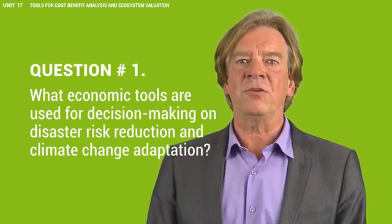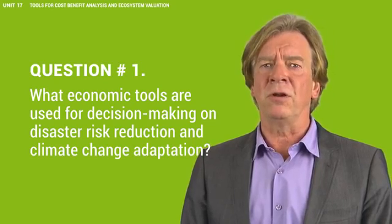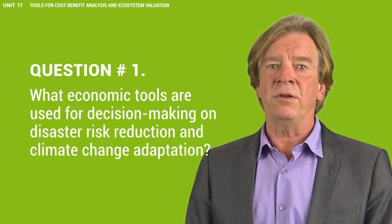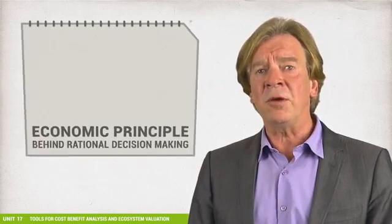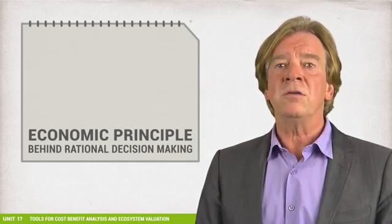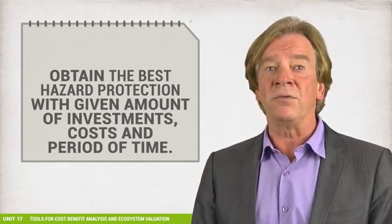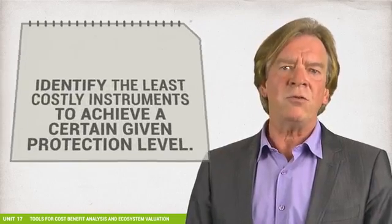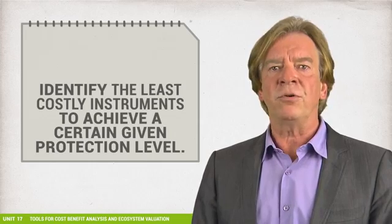Decision-making on disaster risk reduction takes place at various scales, from the national down to the local level. At the macro level, governments take decisions, while at the local level, stakeholders such as communities and project managers are involved. The economic principle behind rational decision-making is the same: we either want to obtain the best protection against hazard events with a given amount of investment and cost over a certain period of time, or we try to identify the least costly instruments to achieve a certain given protection level.